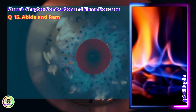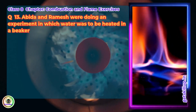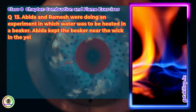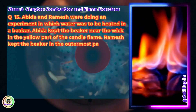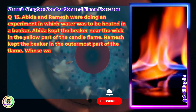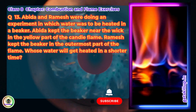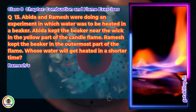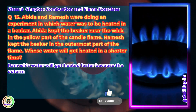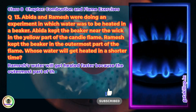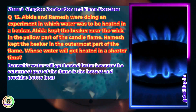Question 13: Abhida and Ramesh were doing an experiment in which water was to be heated in a beaker. Abhida kept the beaker near the wick in the yellow part of the candle flame. Ramesh kept the beaker in the outermost part of the flame. Who's water will get heated in a shorter time? Answer: Ramesh's water will get heated faster because the outermost part of the flame is the hottest and produces better heat transfer.